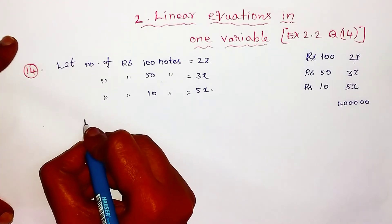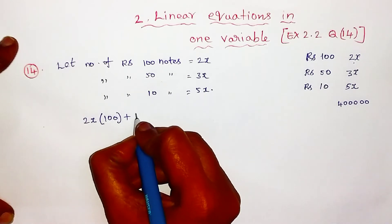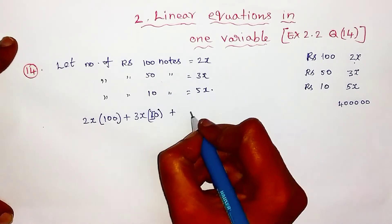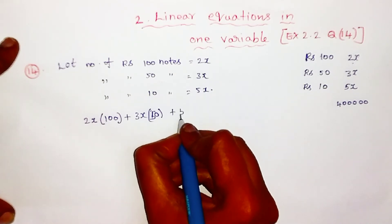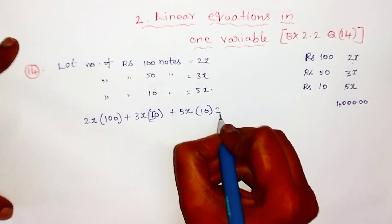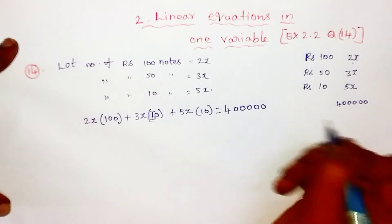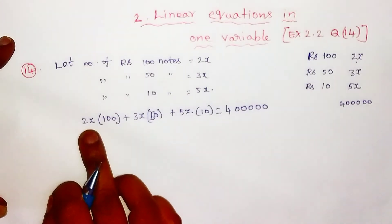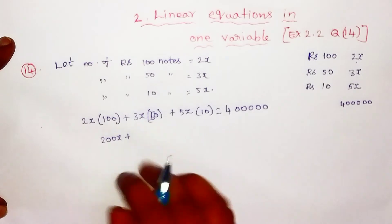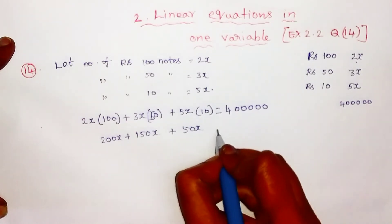So the equation is: 2x into 100 plus 3x into 50 plus 5x into 10 equals 4 lakhs. That gives us 200x plus 150x plus 50x equals 4 lakhs.